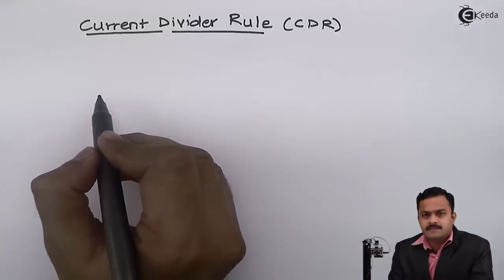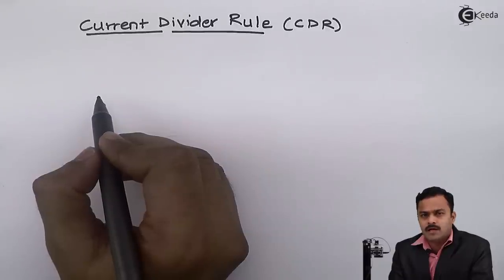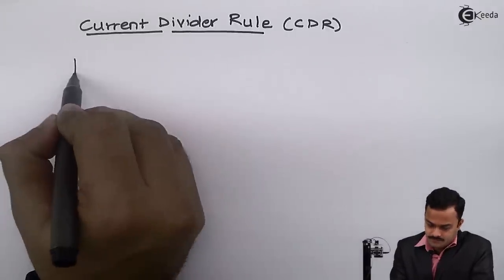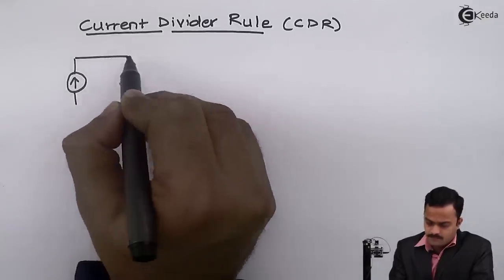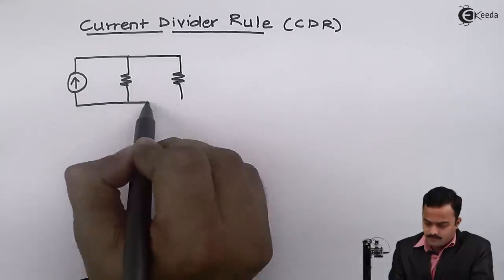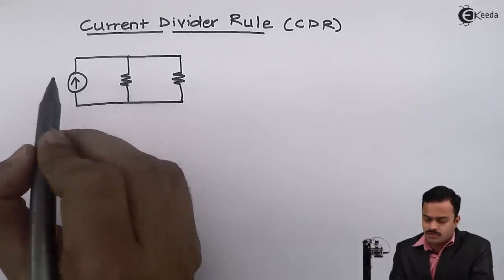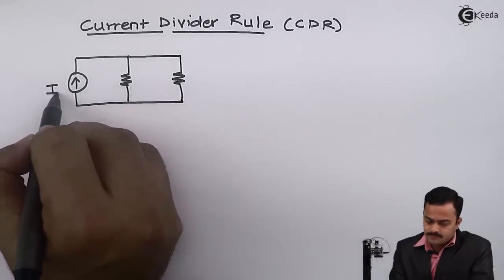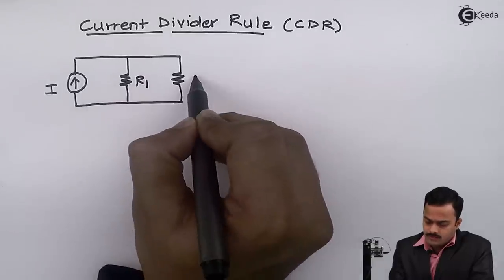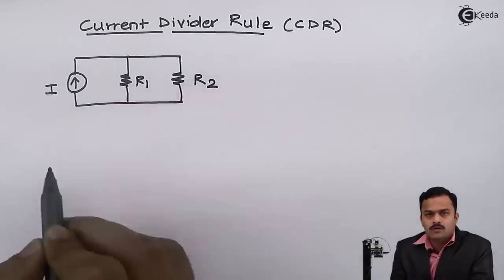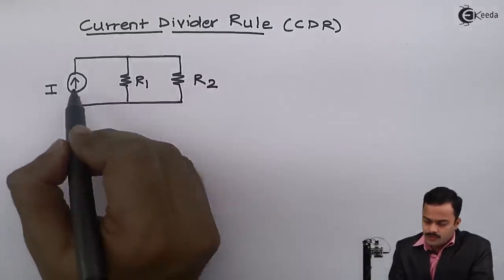I am considering a circuit having one current source and two resistances connected in parallel to that current source. Let us have the current source of value I and R1, R2 connected in parallel to this current source.